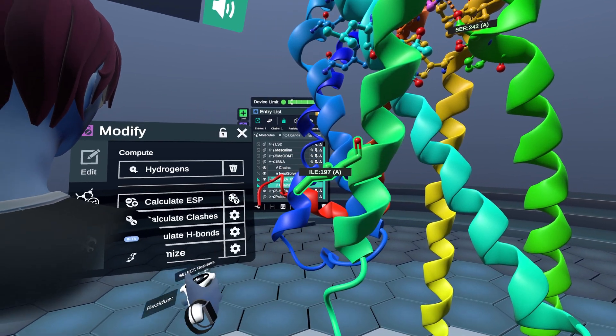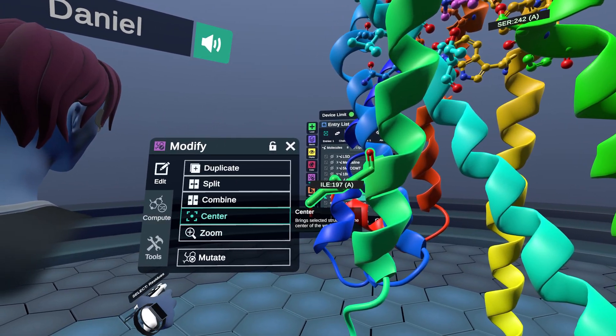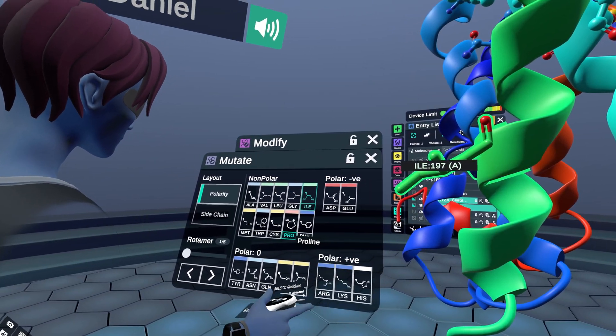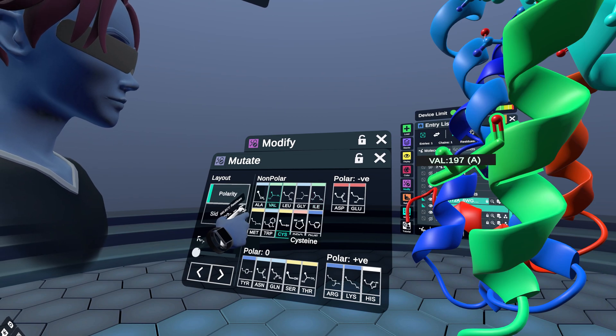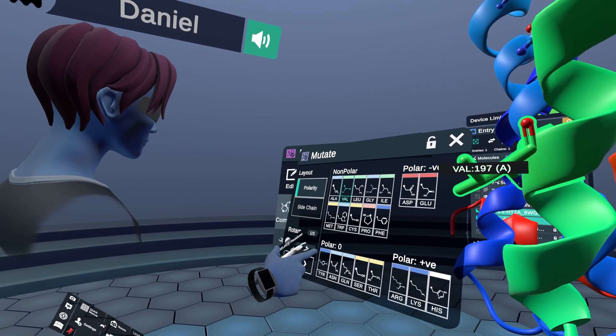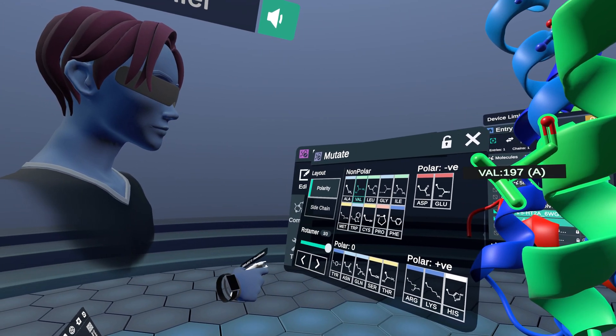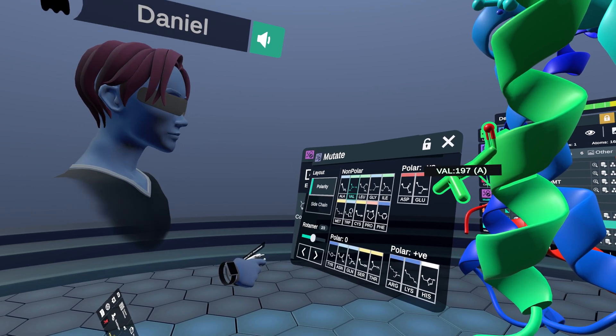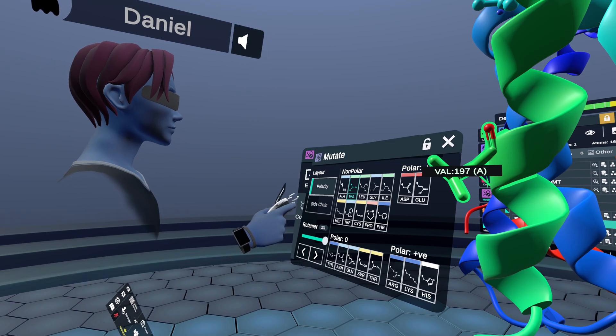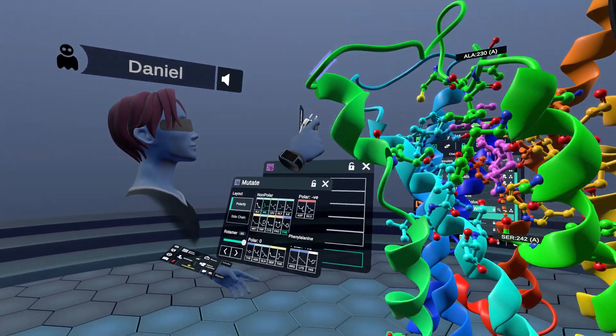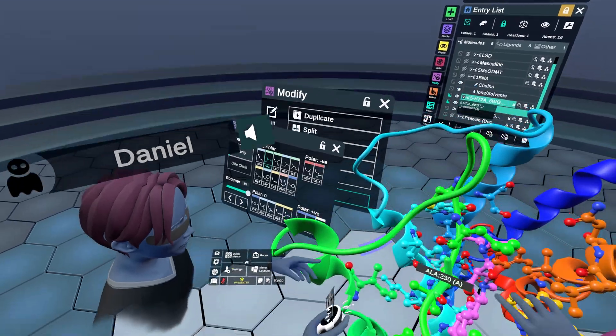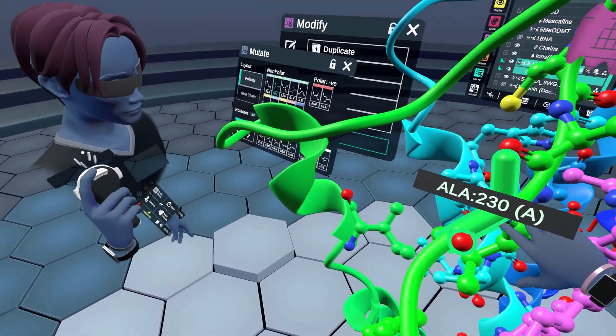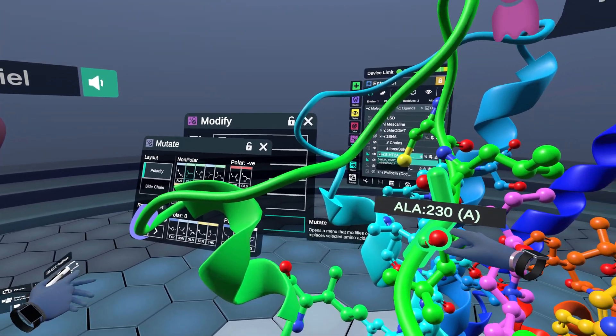So we can open the modify menu here and the mutation menu. And basically just mutate this isoleucine to valine. Boom. And we have a few rotamers apparently that we can cycle through. But basically this is what happens in this polymorphism here. But then we also have, yeah, the alanine that we mentioned. And this guy actually mutates to a threonine. So let's mutate that to a threonine.